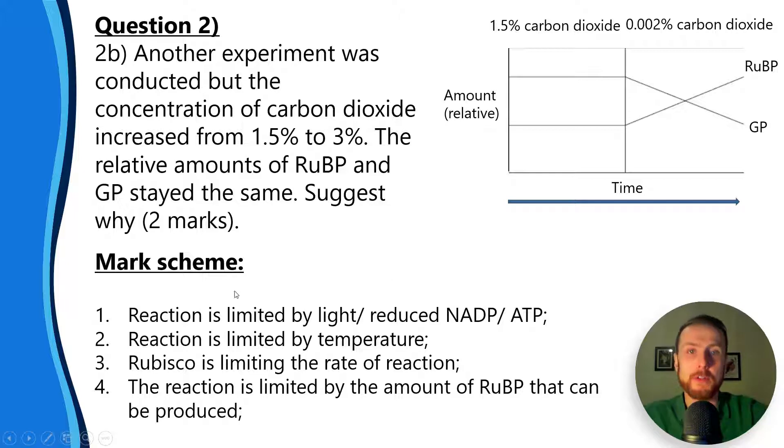Number four: the reaction is limited by the amount of RuBP that can be produced. It's not the RuBP to GP that's limiting it, which is the CO2-dependent part. It's actually the GP to TP to RuBP which doesn't involve carbon dioxide that's limiting the rate of reaction. That part of the reaction requires reduced NADP to convert GP to TP, it requires ATP to go from GP to TP, and it requires ATP to go from TP to RuBP.